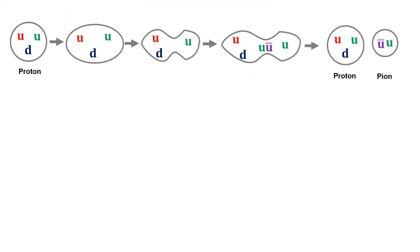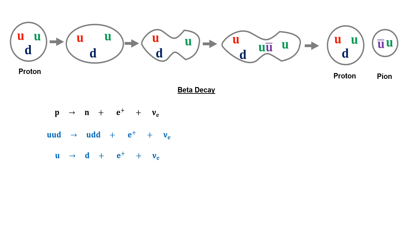This can also be understood through beta decay. In beta-plus decay, a proton decays into a neutron, positron, and neutrino. Since protons and neutrons are hadrons, the proton has two up and one down quark while the neutron has one up and two down quarks. Rewriting this in terms of quarks, one up quark of the proton is converted into a down quark and emits a positron and neutrino. In beta-minus decay, a neutron decays into a proton, electron, and antineutrino — a down quark of the neutron is converted into an up quark, emitting an electron and antineutrino.